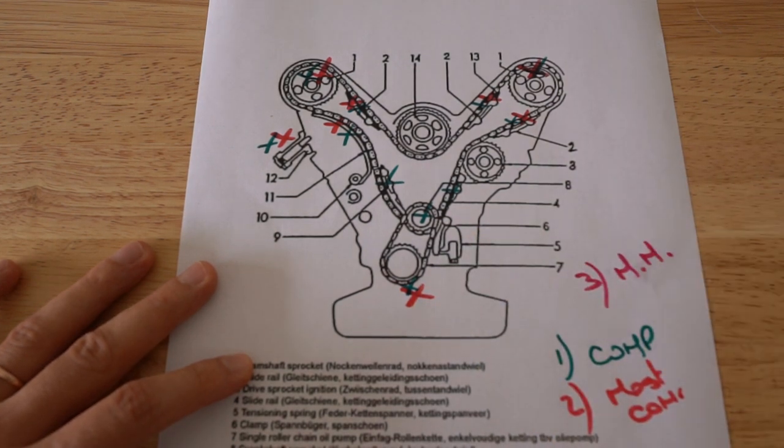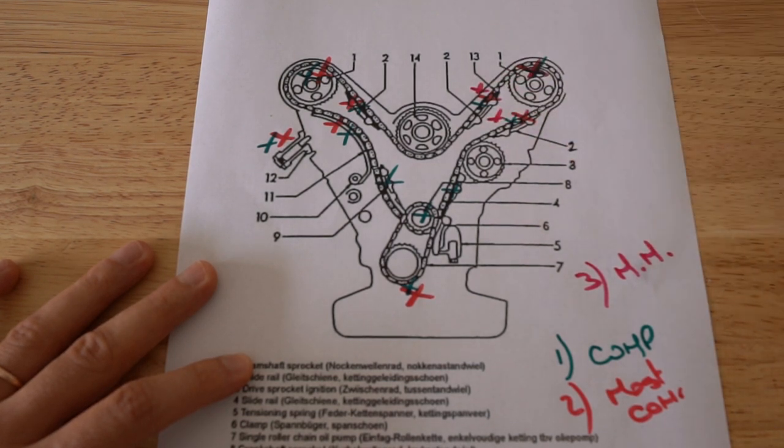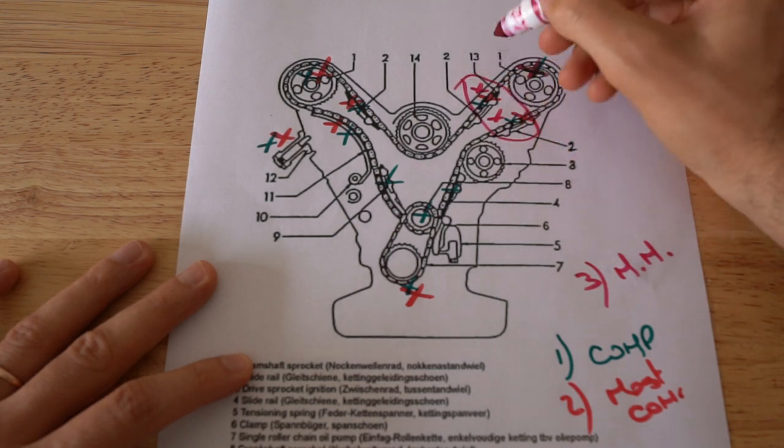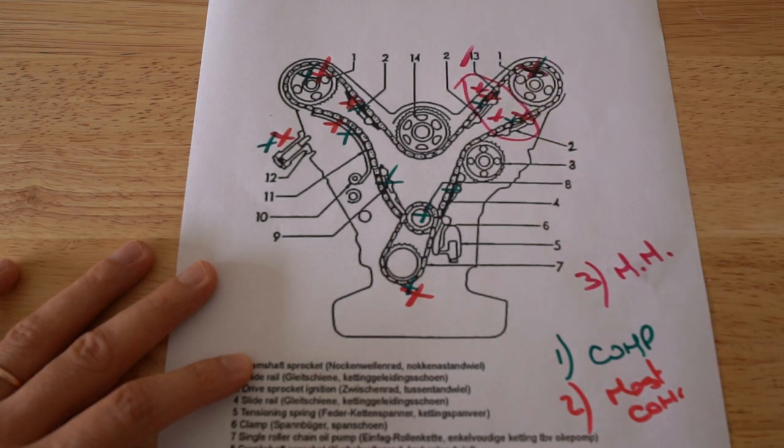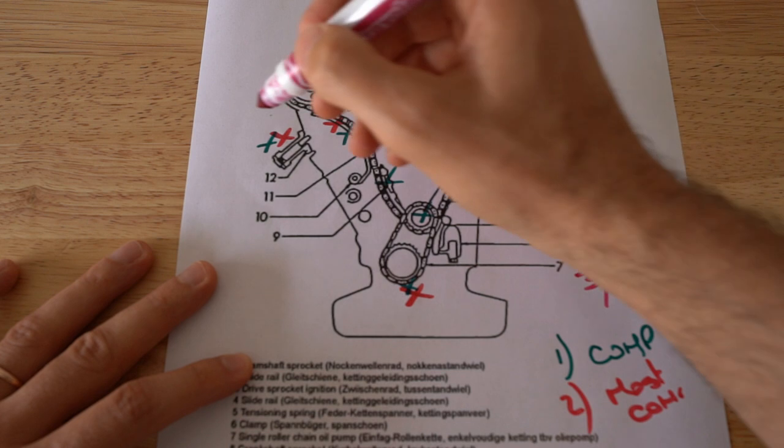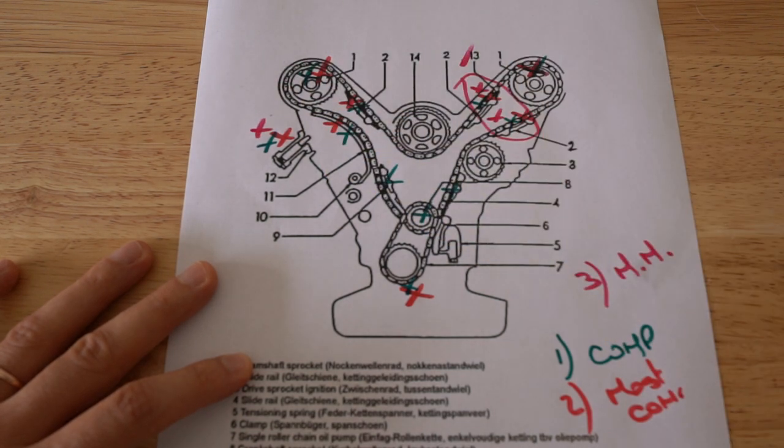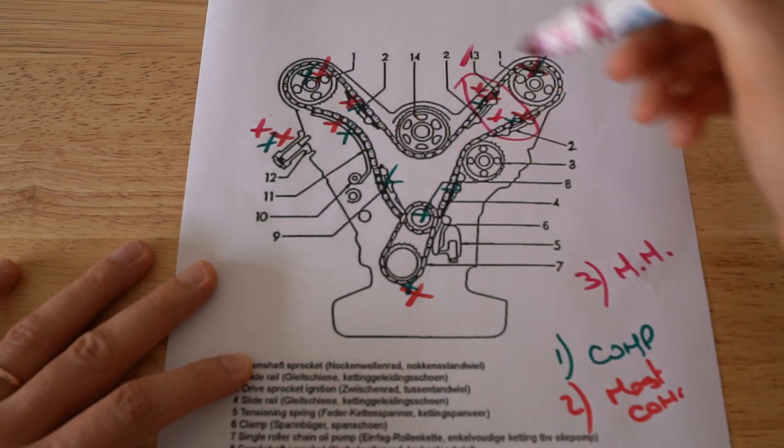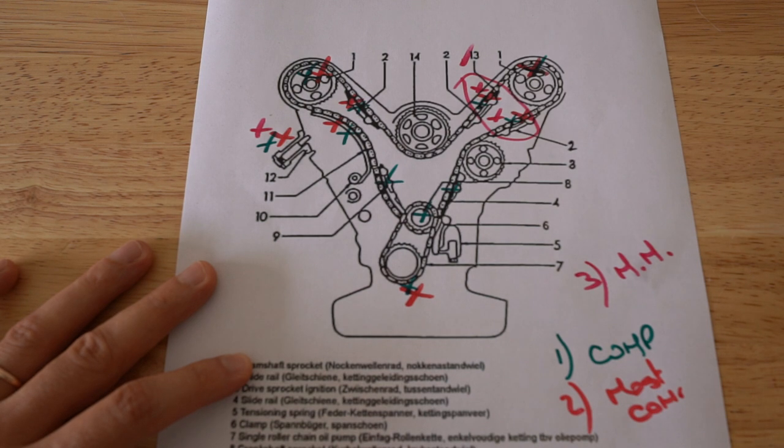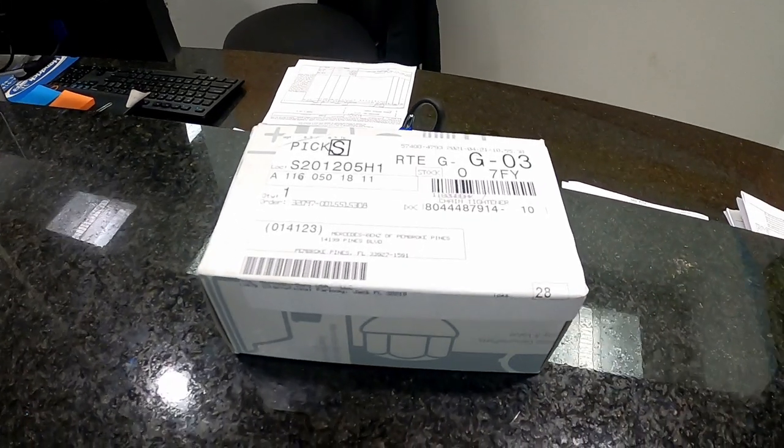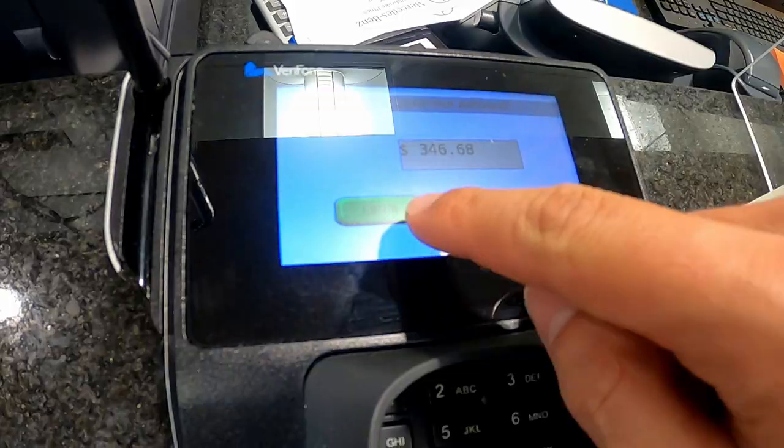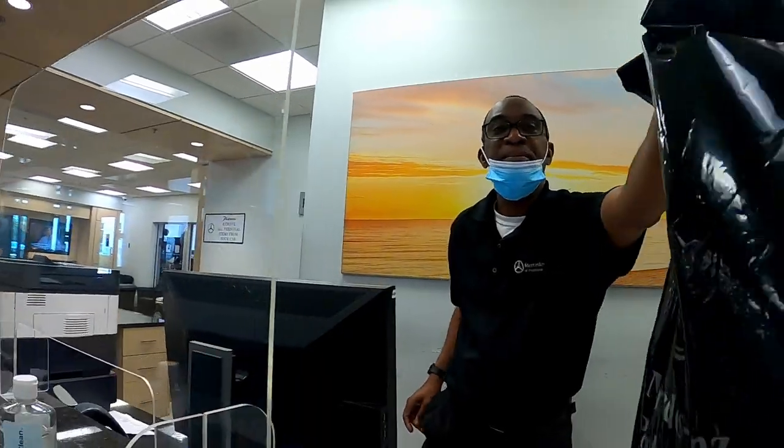And then the third option, which is gonna be the McMood one, is gonna be the following. As we saw, the left side upper guides, they were replaced, so these two, check. And then what we're gonna do now is we're gonna replace the tensioner. We're gonna keep all the old sprockets, we're gonna keep the old chain, and we're gonna see how it goes. Let's get started. Thank you very much, have a good one.